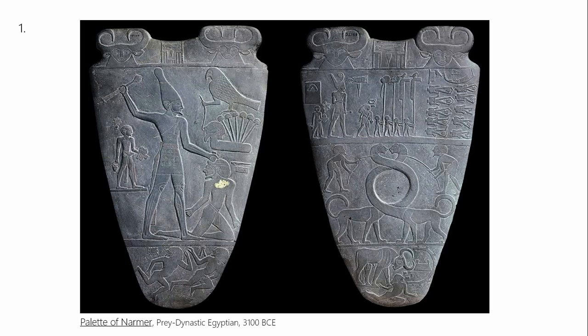Remember that attribution can be pretty general, especially when we don't know the specific name of the artist, and that date can also be general. I give you a pretty wide range depending on how old the work is. In this case, because it is just at 3,000 years BCE, it has to be accurate within approximately 100 years on either side of 3,100 BCE. So for the Palette of Narmer, what are some of the things you could say?